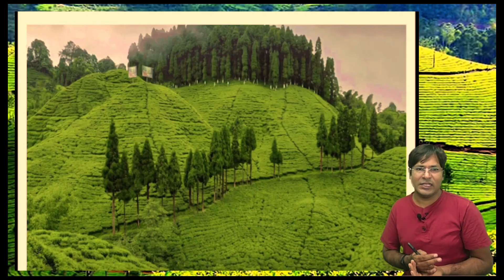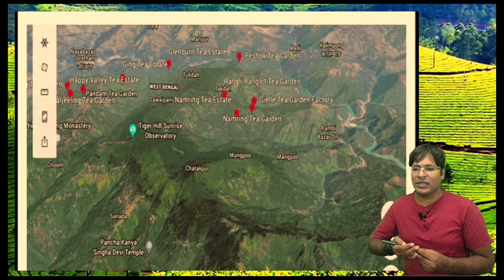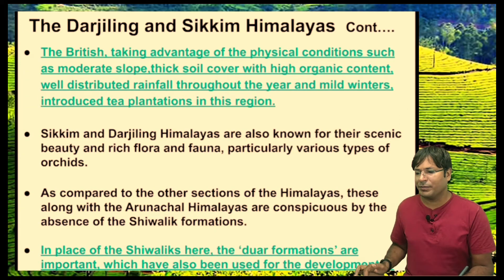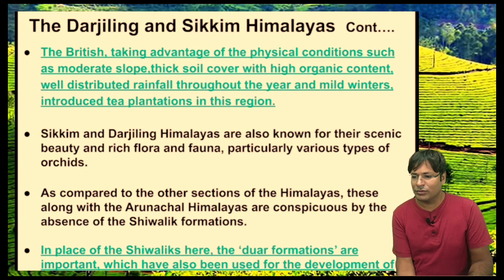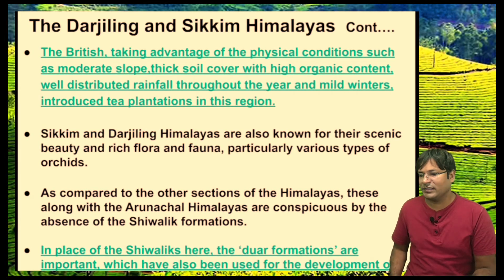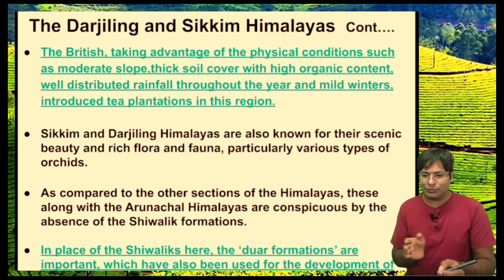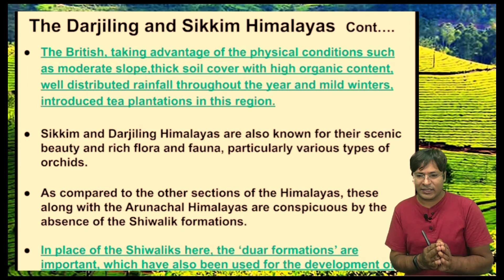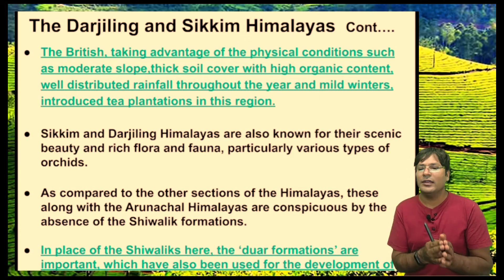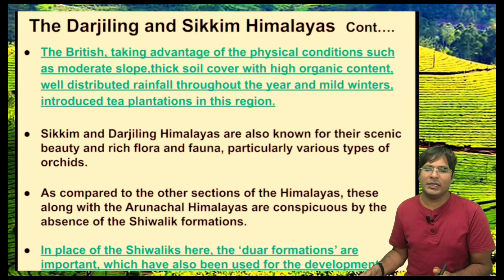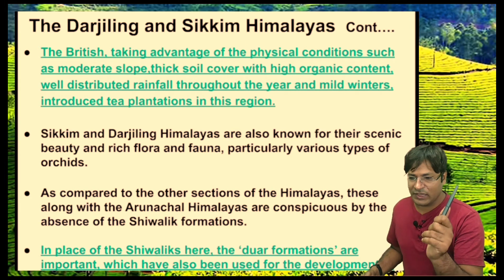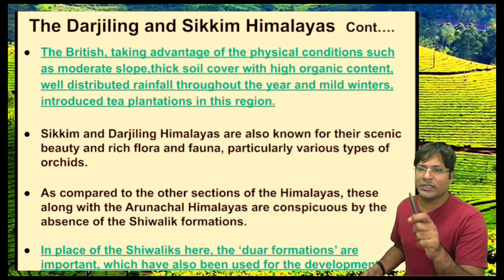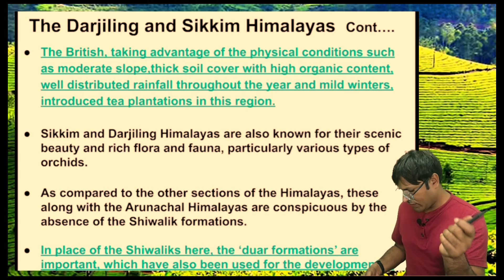Along with being commercially important, the tea plantations and the pleasant weather of this part of the Himalayas are also an attraction for tourism. Compared to other sections of the Himalayas — like the Kashmir and Himachal-Uttarakhand Himalayas — this region, along with the Arunachal Himalayas, is characterized by the absence of the Siwalik formation. In those other regions, all three ranges — Greater Himalayas, Lesser Himalayas, and the Siwalik — are visible, but not here.